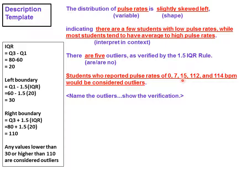0, 7, and 15 are all less than 30. 112 and 114 are all greater than 110.